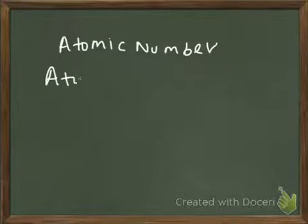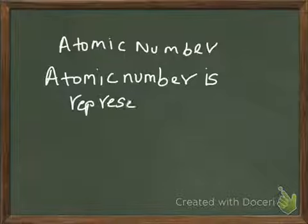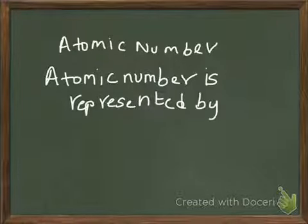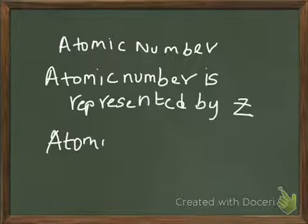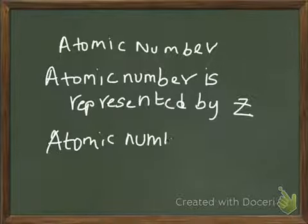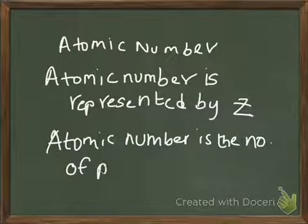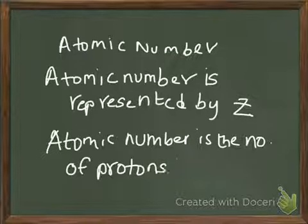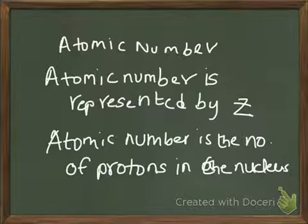Atomic number is represented by z. Atomic number is the number of protons in the nucleus of an atom.